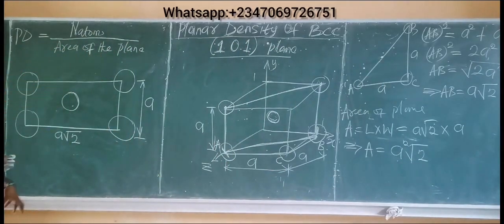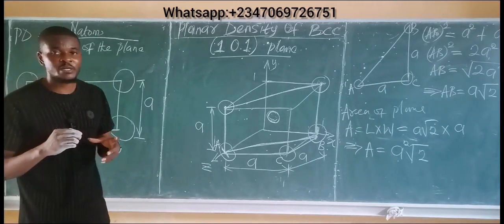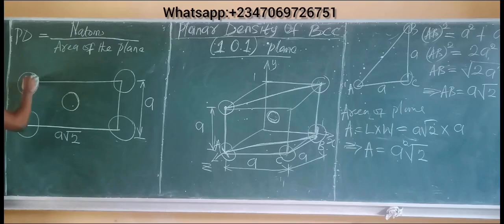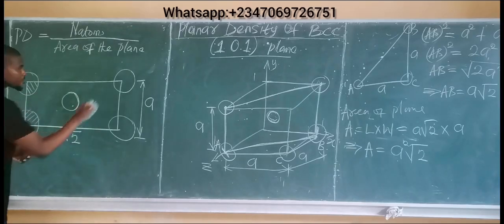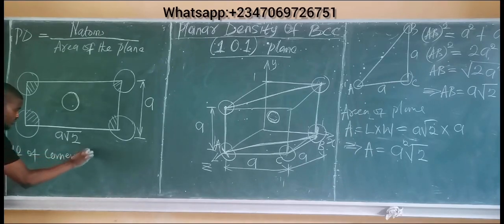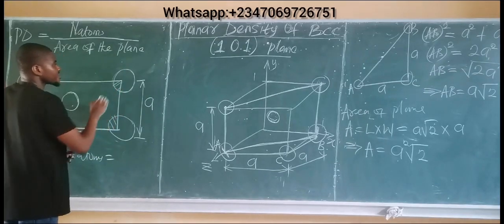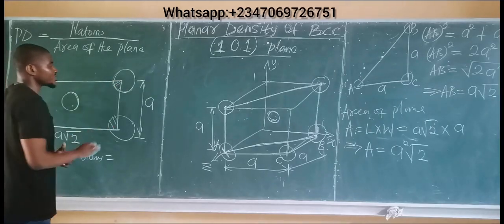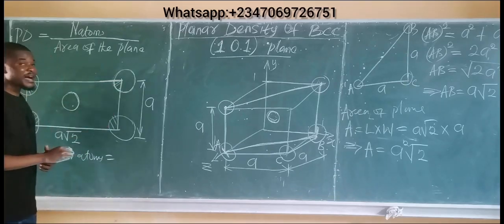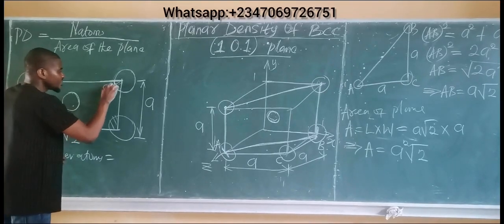Now we find the number of atoms on the plane. Atoms are spherical, so the entire angle of an atom is 360°. We only consider the portion enclosed within the rectangle. For corner atoms, the angle enclosed at each corner of the rectangle is 90°, so each corner atom contributes 90°/360° = 1/4 of its volume.